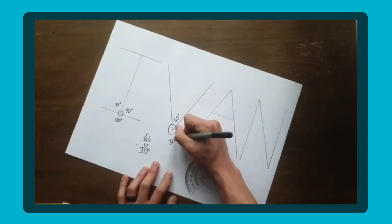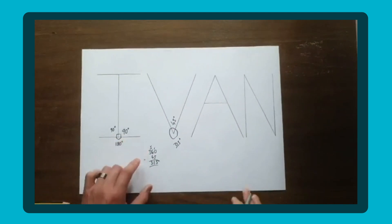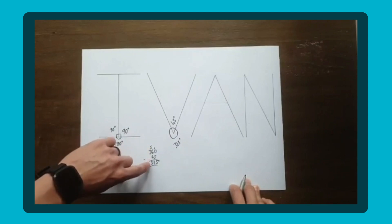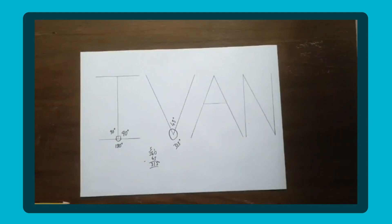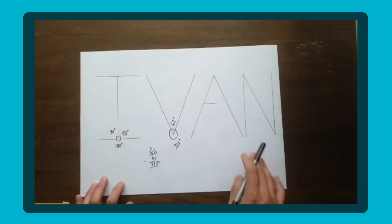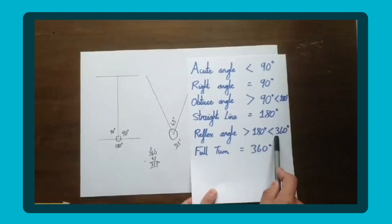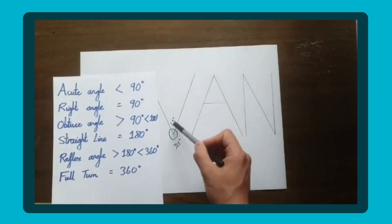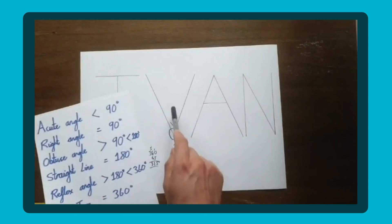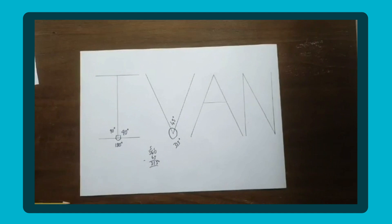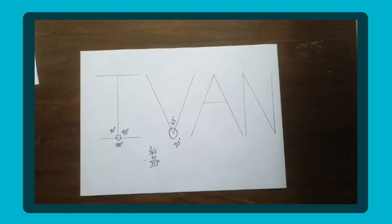We can double-check our answer by subtracting 45 from 360, which gives 315 — which it is. So we've got our 315 degrees — a reflex angle, more than 180 but less than 360. And the 45 degrees is less than 90, so that's an acute angle. Just asking children every now and then drills it into their minds: 'what is this angle?' — and eventually they'll identify these different types straight away without having to measure them, which is a good skill in itself.